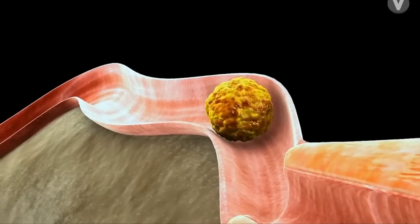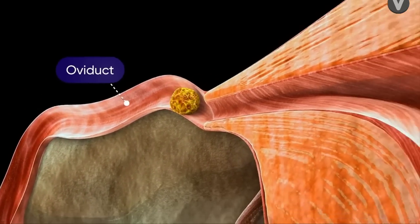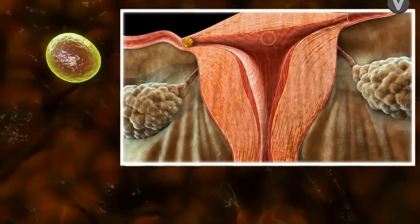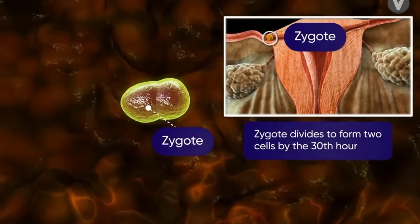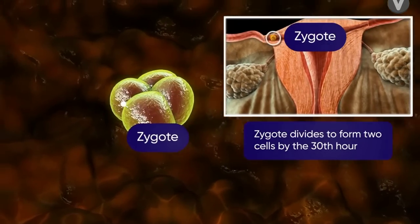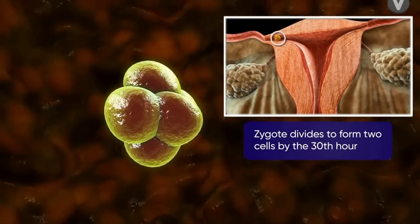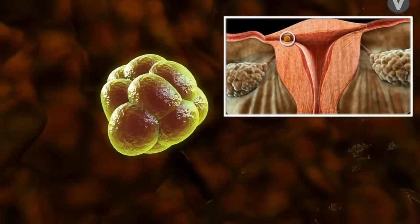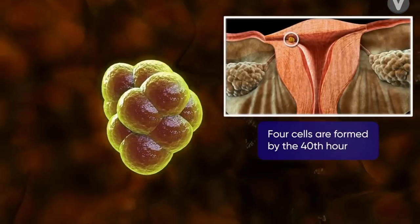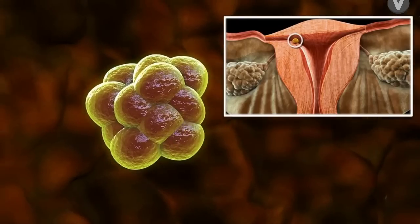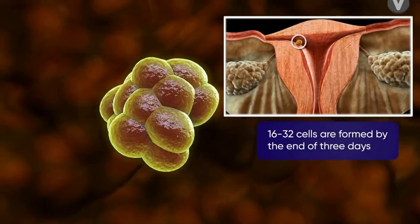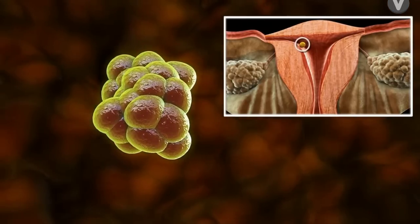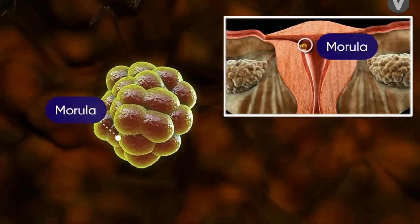The zygote continues to move down the oviduct to the uterus. However, during the migration, the zygote undergoes a mitotic division to form two cells by the 13th hour. Cell division continues and four cells are formed by the 14th hour and 16 to 32 cells in three days, by the end of which the mass of cells is called a morula.